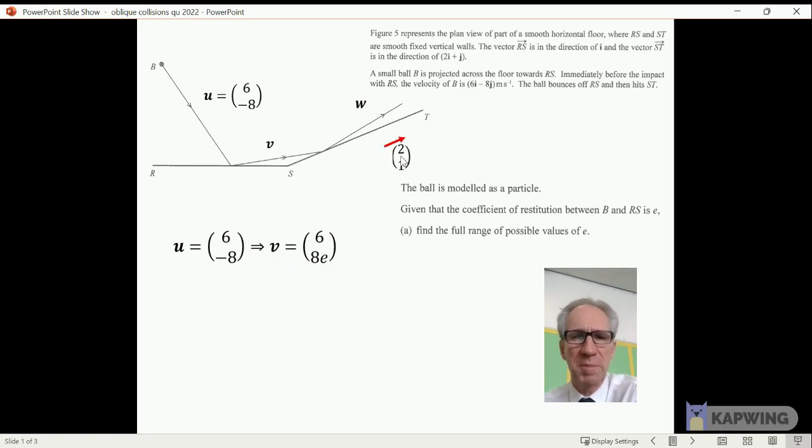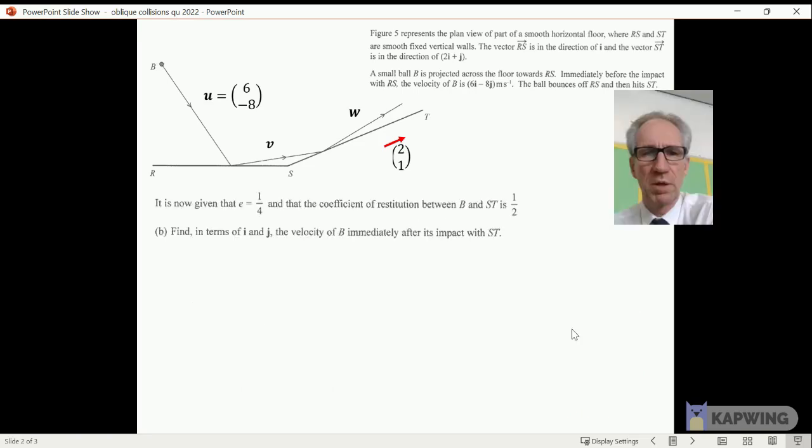I'm going to compare it with the vector parallel to the ST wall because I need this to be shallow enough, not steep, so it does hit the wall. 6 is three times more than 2, so 8e needs to be less than three times more than 1. That e needs to be less than 3/8 because if it was more than that it would be too steep and it wouldn't hit ST. So the full range of e is 0 to 3/8 non-inclusive. We need e to be more than zero.